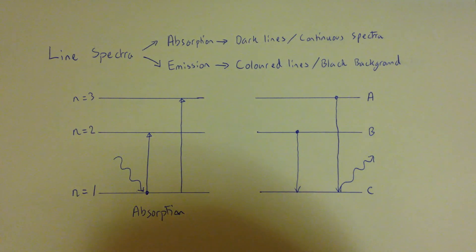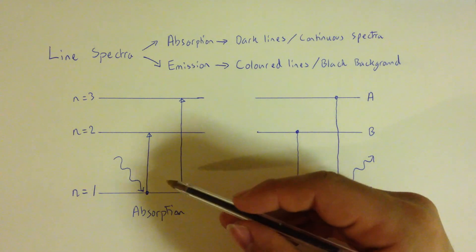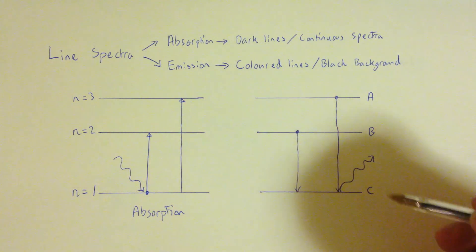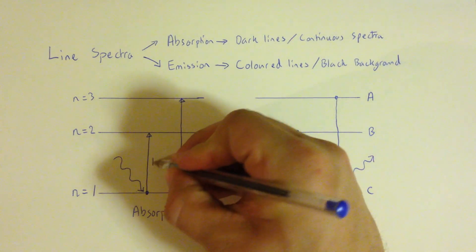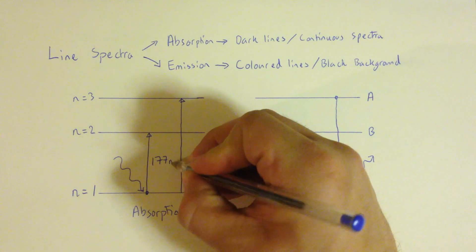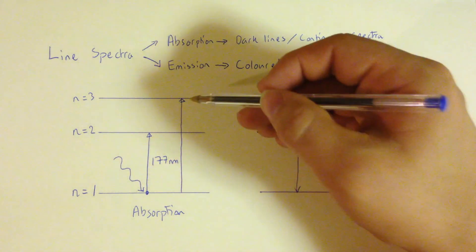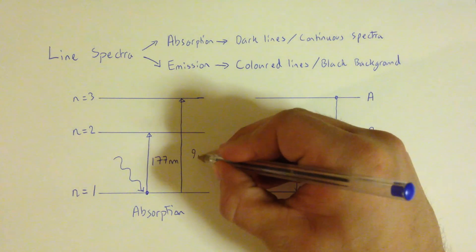So these coloured lines correspond to very specific frequencies and very specific energies and wavelengths. So, for example, if we take our absorption spectra and we consider this energy gap here from B to C to be equivalent to 177 nanometres, and if we consider this energy gap from C to A to be 95 nanometres.